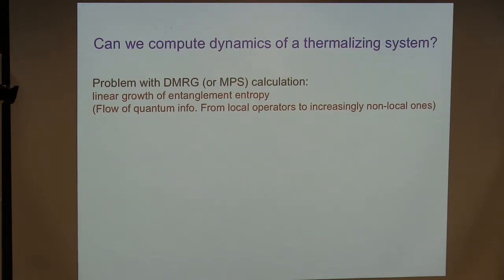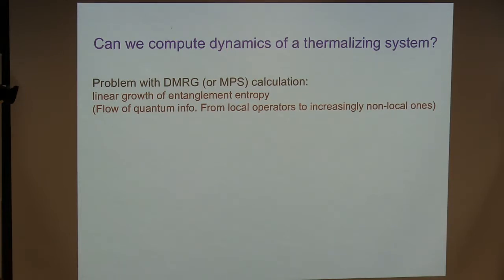The simplest case is where there is only energy diffusion. So the question is: can we calculate this kind of thermalization dynamics in a thermalizing system? Usually the answer is that it's very, very hard. We don't have Monte Carlo for dynamics. Exact diagonalization is for very small systems. We have DMRG, time-dependent DMRG, but the usual problem is that as you go to longer and longer times, the entanglement entropy grows linearly, which means that the number of states you have to keep in DMRG grows exponentially in time, and you hit an exponential wall.